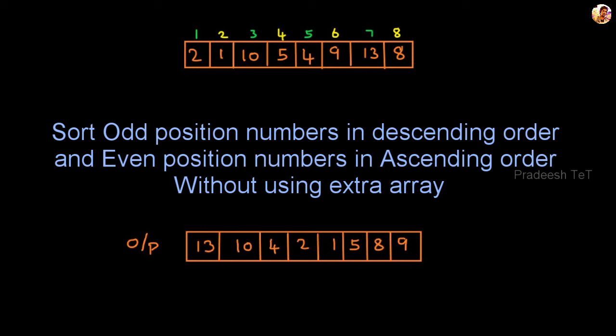First of all, let's see the problem. You can see the input array — the values are 2, 1, 10, 5, 4, 9, 38. Now, what is the output? We will sort the numbers in descending order and we will sort the numbers in ascending order.